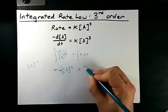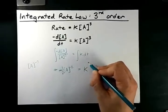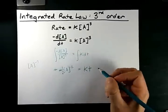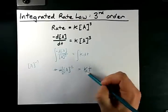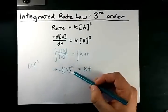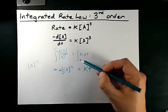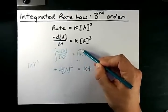And on this side, we have a single constant k dt, and that turns into kt itself. Now, both of these have to be integrated from time 0 to time t.